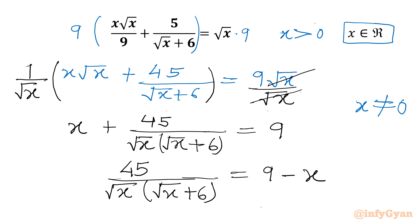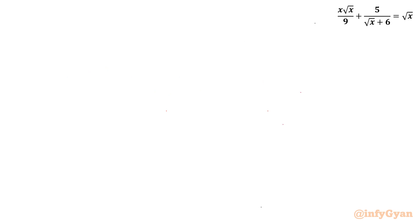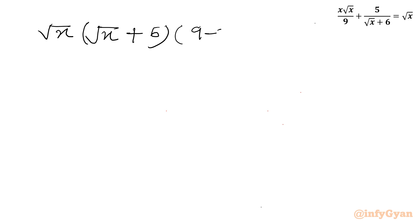Now I can cross multiply. So √x times (√x plus 6) times (9 minus x) equals 45.